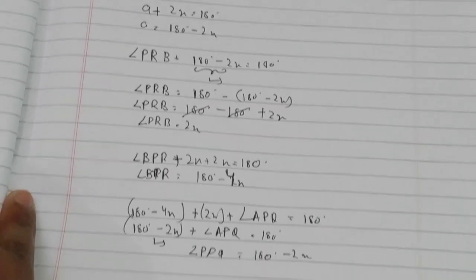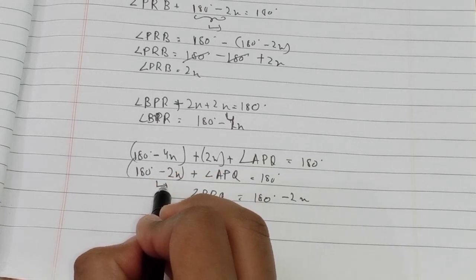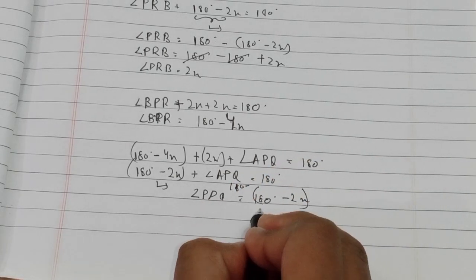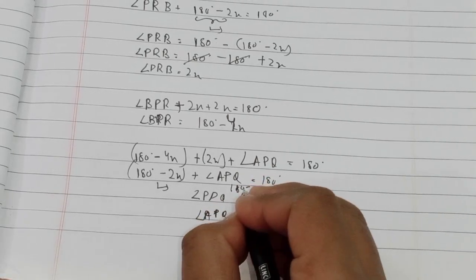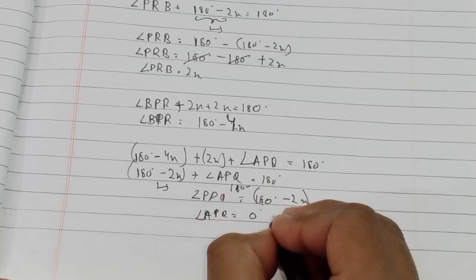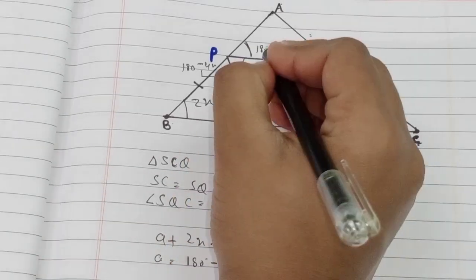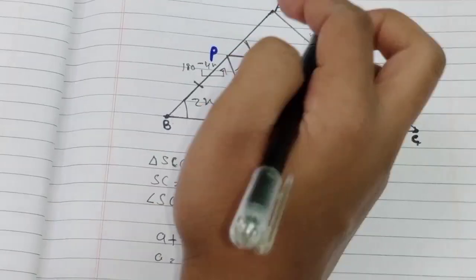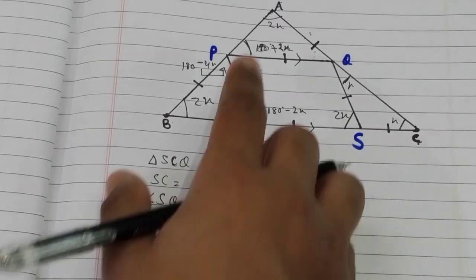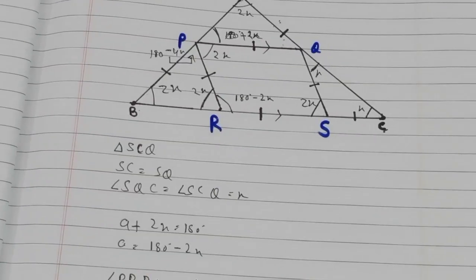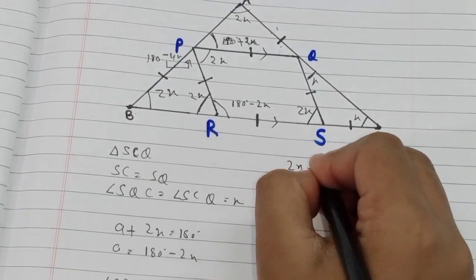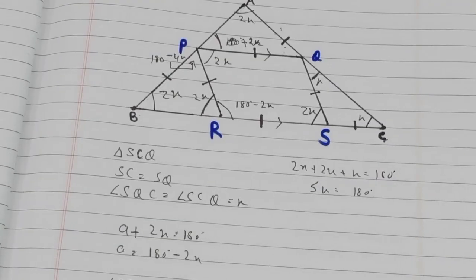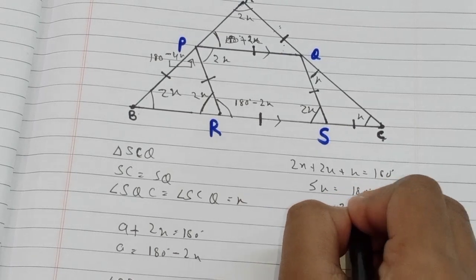So angle APQ is 2x. Now we can sum all the angles. We have 2x plus 2x plus x equals 180 degrees, so 5x equals 180 degrees. Dividing both sides by 5, we get x equals 36 degrees.